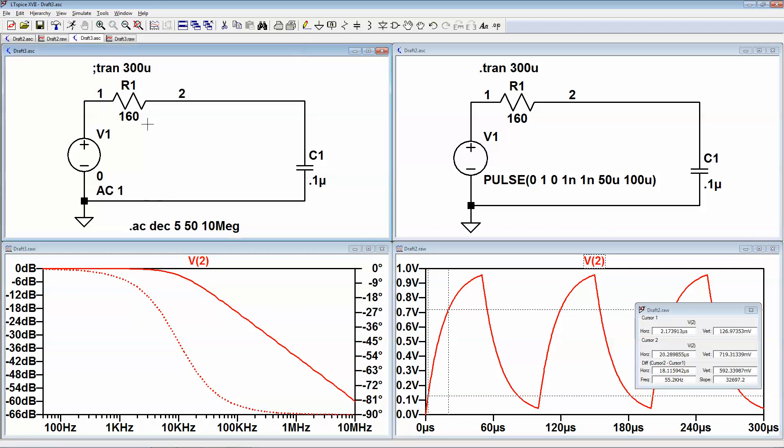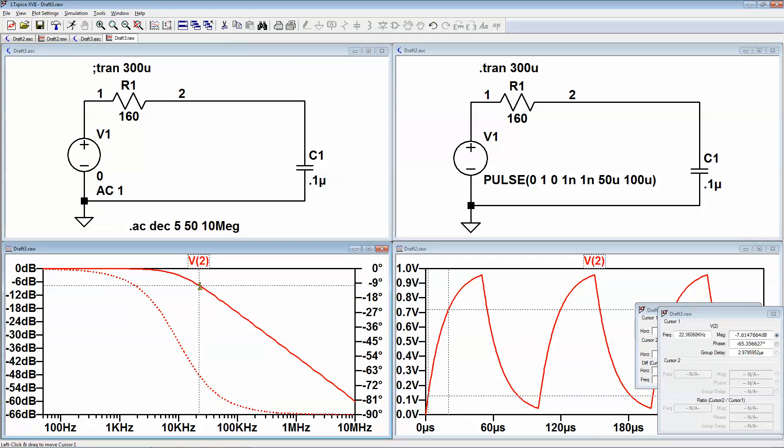Now over here we're doing the same thing, where we're trying to measure the same thing by finding the 3dB point. So I move this till I get a magnitude of about 3 and phase of minus 45, and this is giving me a frequency of close to 10 kilohertz, and I can calculate the time constant from there.